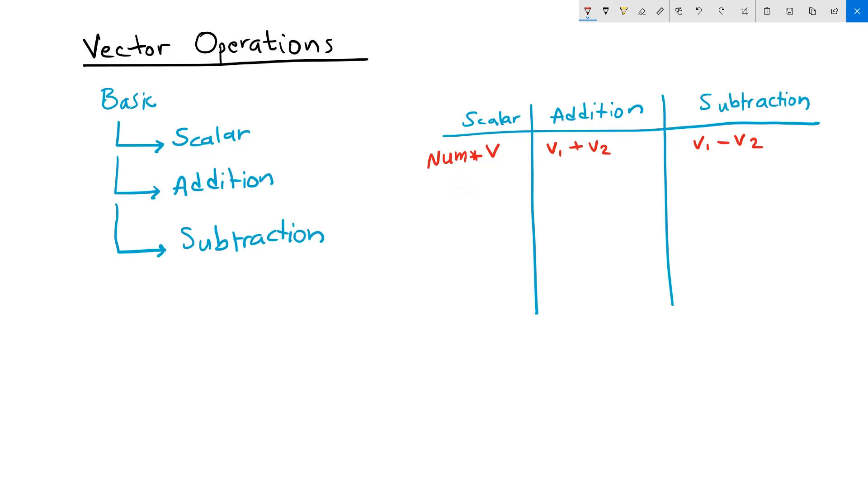The scalar operation creates, as a result, a vector. The addition creates a vector, and subtraction creates a vector.